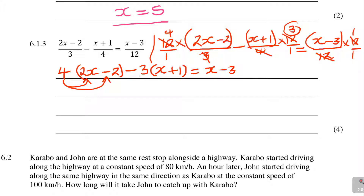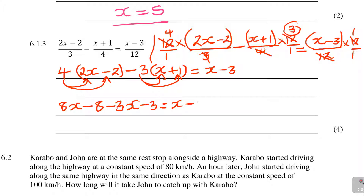Now use the FOIL method — the 4 enters both terms inside the bracket, and the minus 3 enters both terms in its bracket. So: 4 times 2x is 8x; 4 times negative 2 is minus 8; minus 3 times x is minus 3x; minus 3 times 1 is minus 3. That equals x minus 3. Those are the expanded equations.